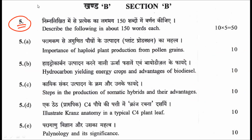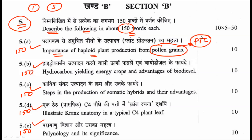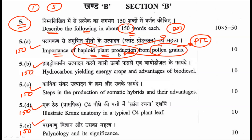Question five is compulsory — just like question one, you have no option for this question. It is divided into five parts, each limited to 150 words and carrying 10 marks. The first sub-question asks you to describe the importance of haploid plant production from pollen grains. This is related to plant tissue culture — normally plants are diploid, but using artificial techniques like anther culture, haploid plants can be created. Describing their importance earns 10 marks.